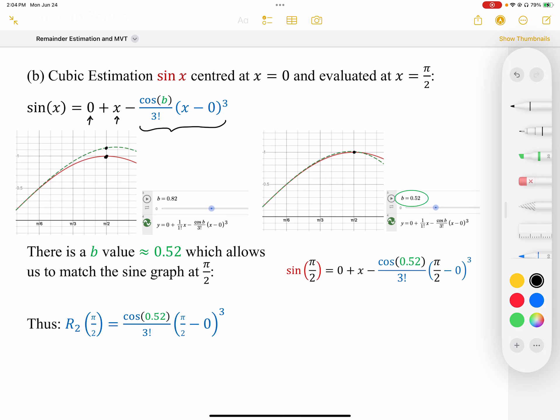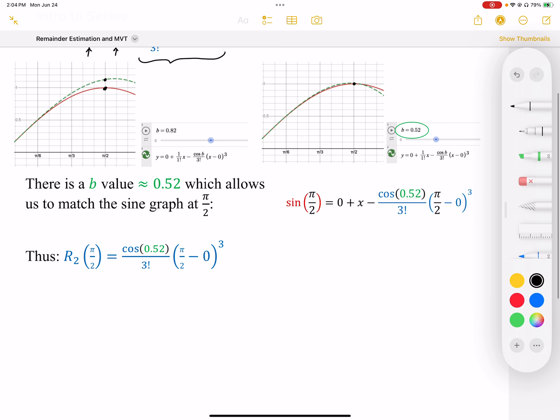And we actually work it out and model it in this way. We can see that it's near 0.52. And so our remainder term, our cubic remainder term, is going to be this cos b over 3 factorial times x to the power of 3.